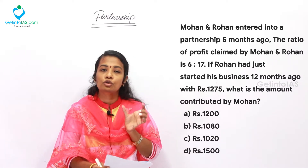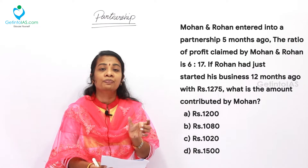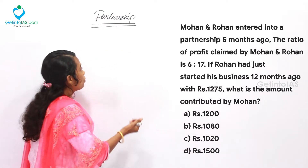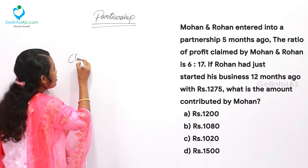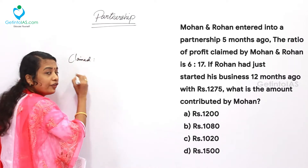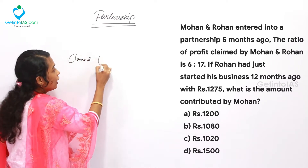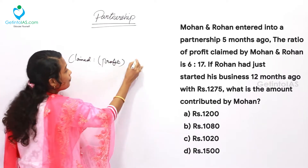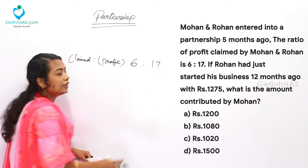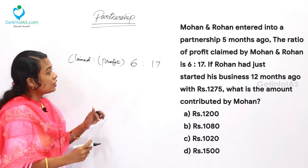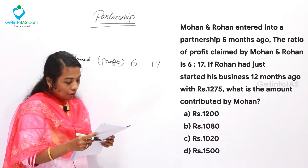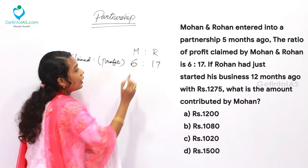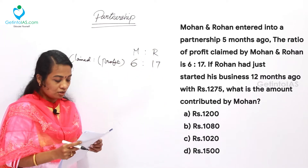This point is to be noted carefully. What is the claiming ratio? 6 to 17. The claimed profit ratio is 6 to 17 — so you will have to take 6 ratio 17. Which is 6 for Mohan and 17 for Rohan.